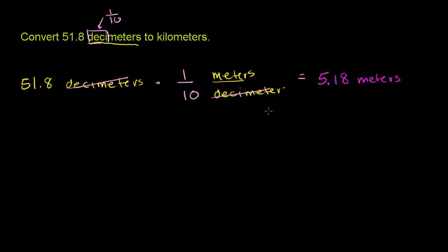And you should always do a reality check. Did it make sense? Does it make sense that 51 decimeters are equal to 5 meters? Well, sure. It should go down. We're going from a smaller unit to a larger unit. So we should have fewer of that larger unit to make the same distance in this case. Meter is a unit of length. Now, we're at 5.18 meters.